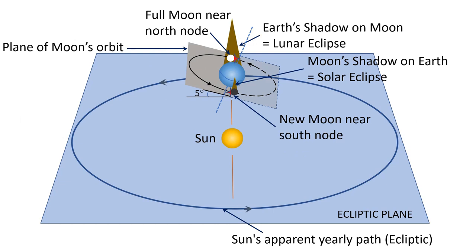If you are curious and want to know why I said that eclipses generally occur when the Moon is at these intersecting points called North Node and South Node but do not always occur, then continue watching. The Moon takes about a month to orbit around the Earth. If the Moon orbited in the same plane as the ecliptic — that is, Earth's orbital plane — then we would have a minimum of two eclipses every month.